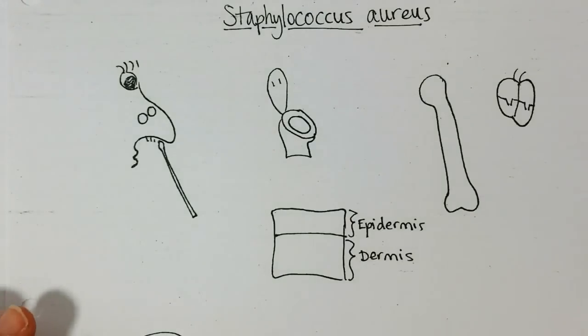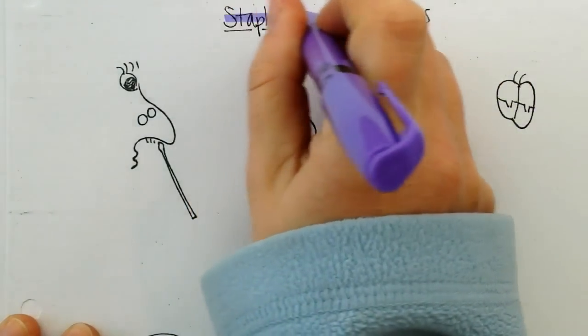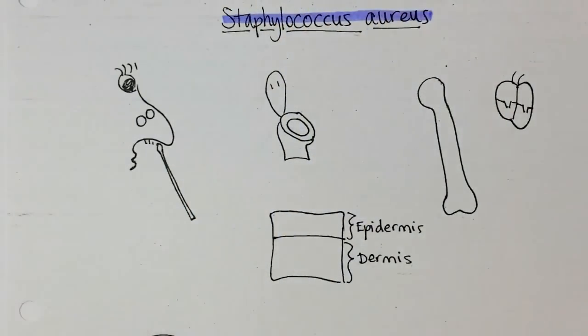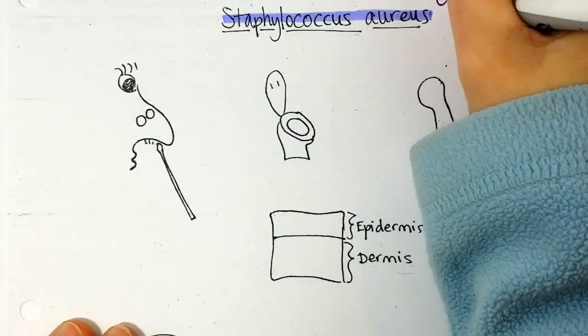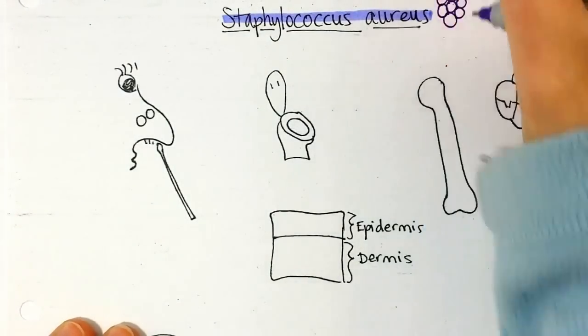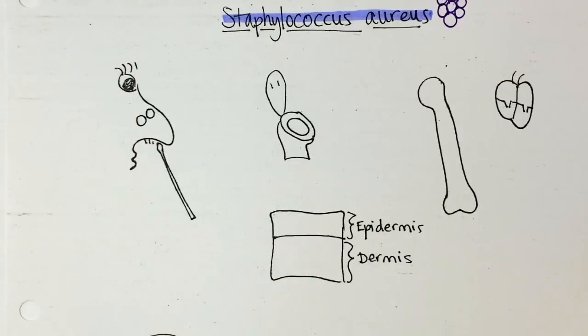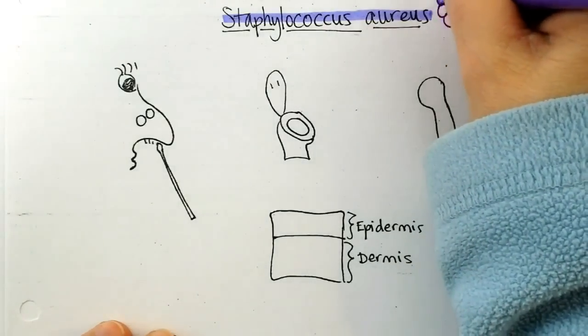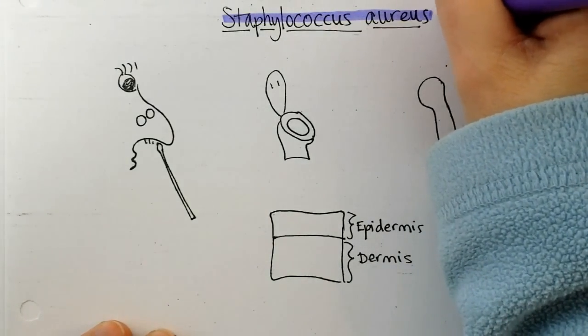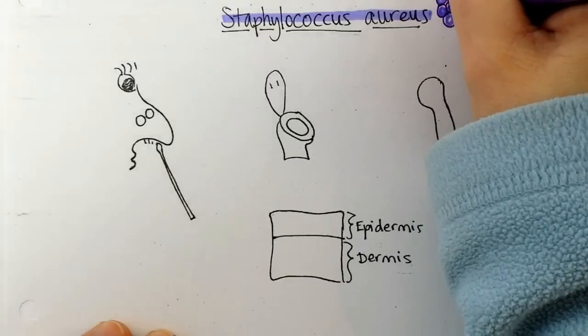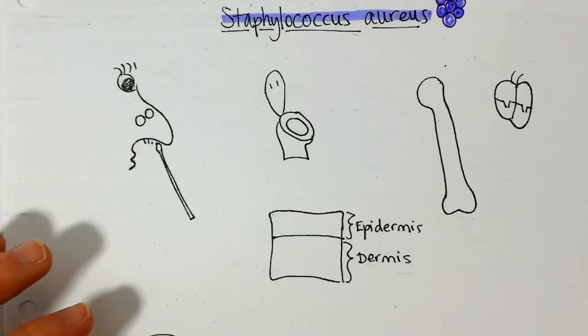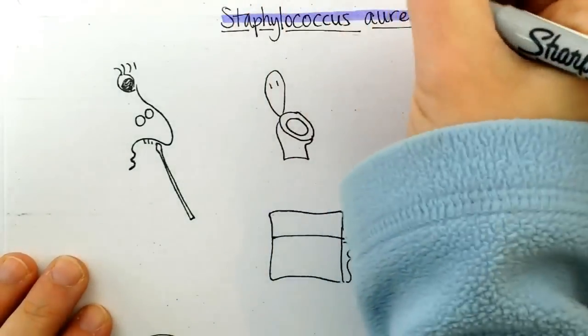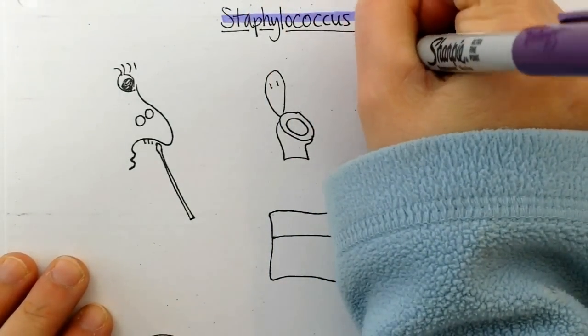So Staph aureus is a gram-positive organism and when it divides it forms clusters of spherical cells. There are different strains but many of them are golden in color and that's actually how Staph gets its name. It's called the Golden Staph.